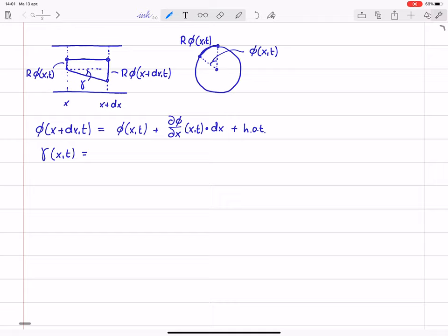And in fact, this γ equals, the tangent of γ is this distance divided by this distance. Now for small angles, the tangent of some angle is the angle itself. So this would be R times φ at x plus dx comma t divided by, so this is the displacement as a whole, but we only need this distance. So we need to subtract R times φ at x comma t, and we should divide this by dx. So that is just the derivative dφ/dx at x comma t multiplied by R, because we subtract R times φ from R times φ plus dφ/dx dx.